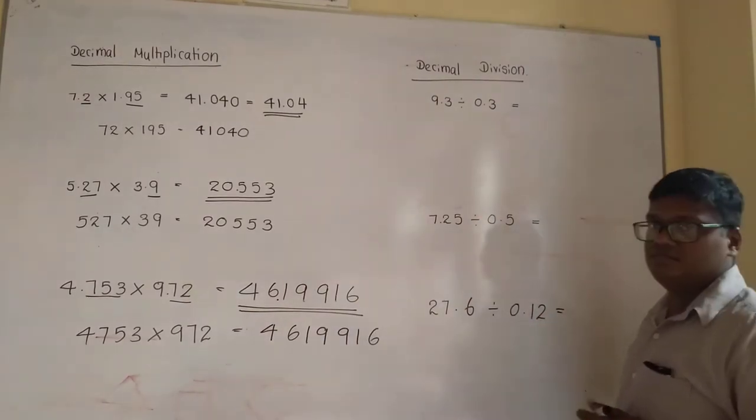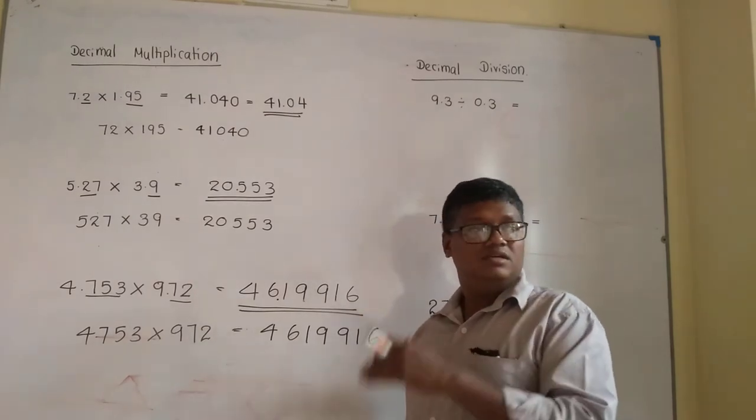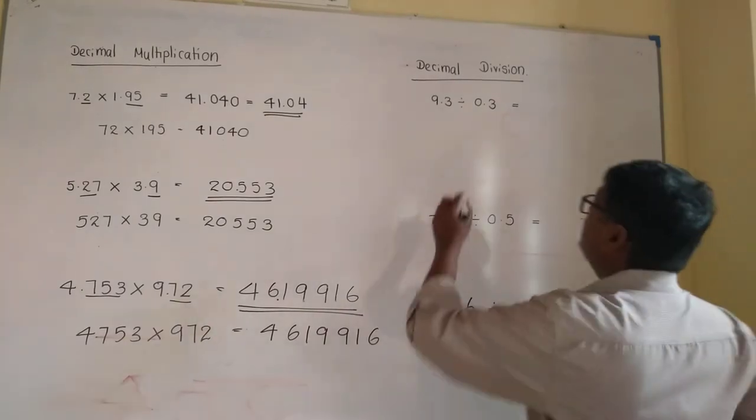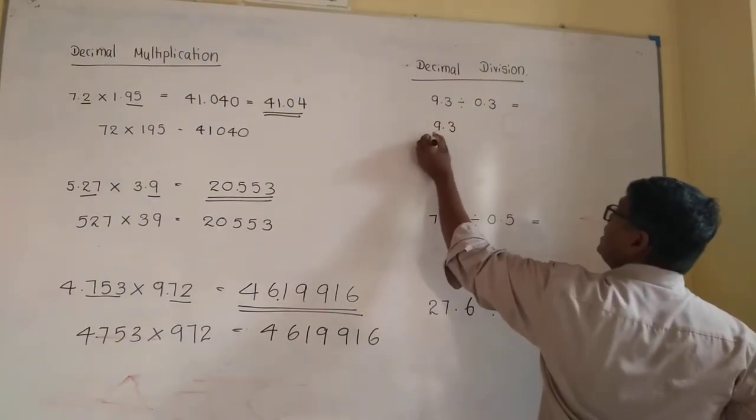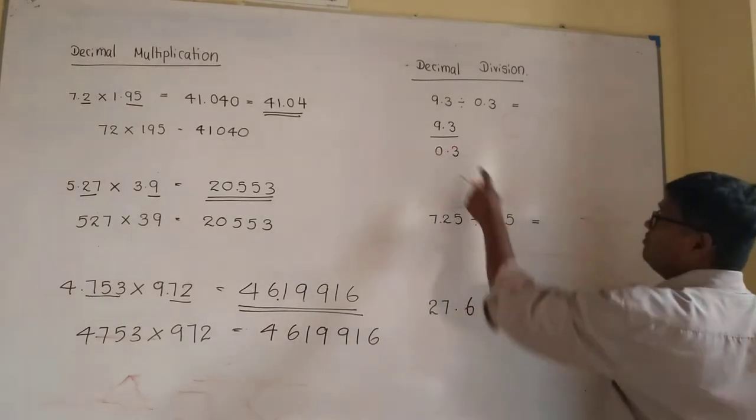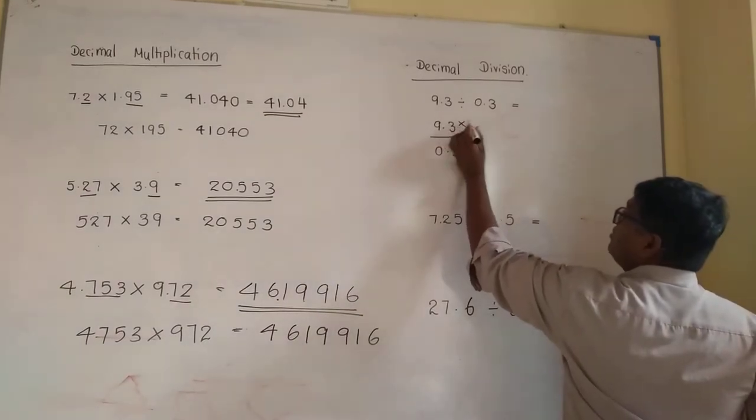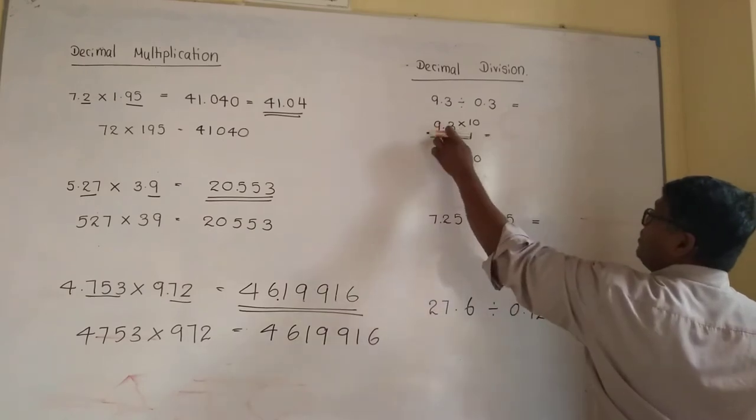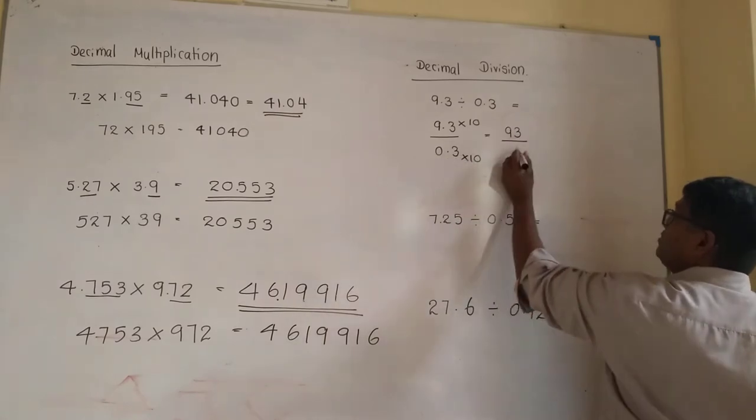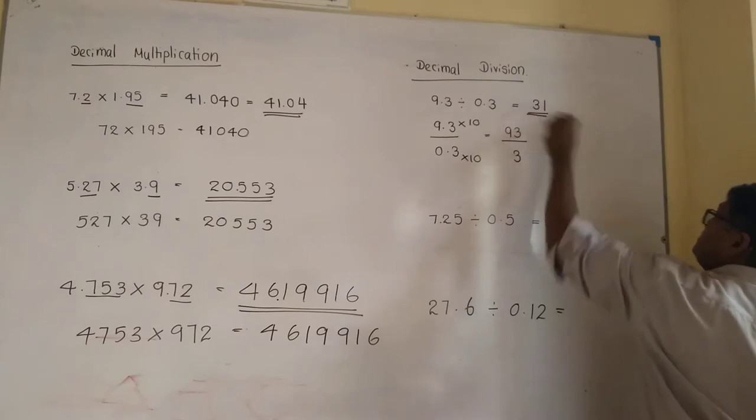Decimal division: we studied that a fraction cannot be divided by a fraction. Therefore, we multiply by the reciprocal. Like that, when it comes to decimal division, 9.3 divided by 0.3—can't divide by a decimal, so make it a whole number. Multiply by 10. Therefore, the numerator should also be multiplied by 10: 93 divided by 3 equals 31. That's the answer.